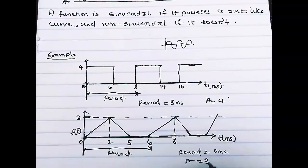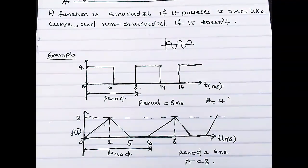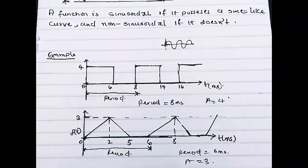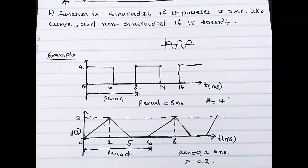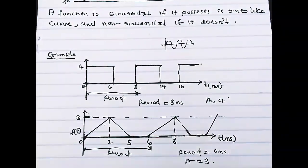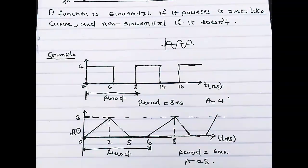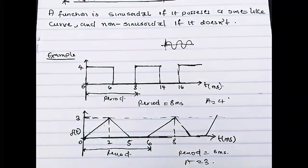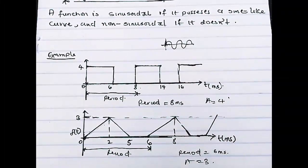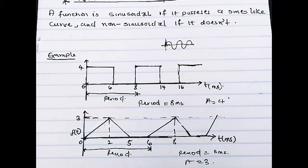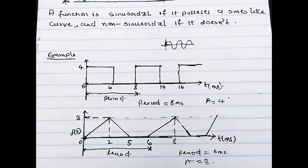My period is six milliseconds and my amplitude, which is also constant throughout the graph, A is three. On our next video we are going to be looking at how to analyze periodic functions — how we can easily express periodic functions in their simplest terms. Thank you guys for watching and see you on the next video.